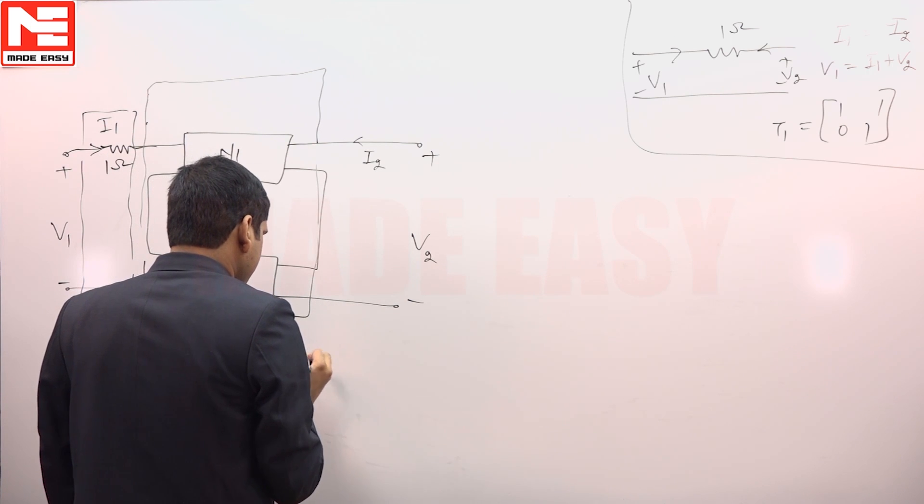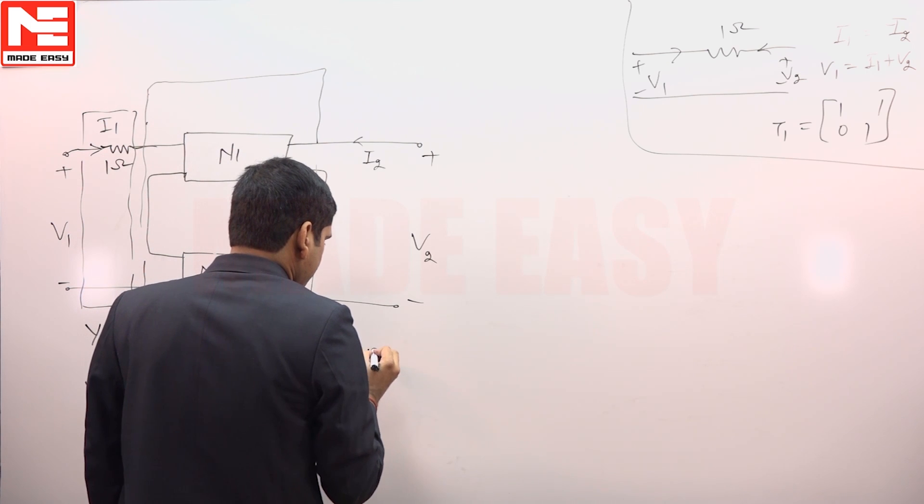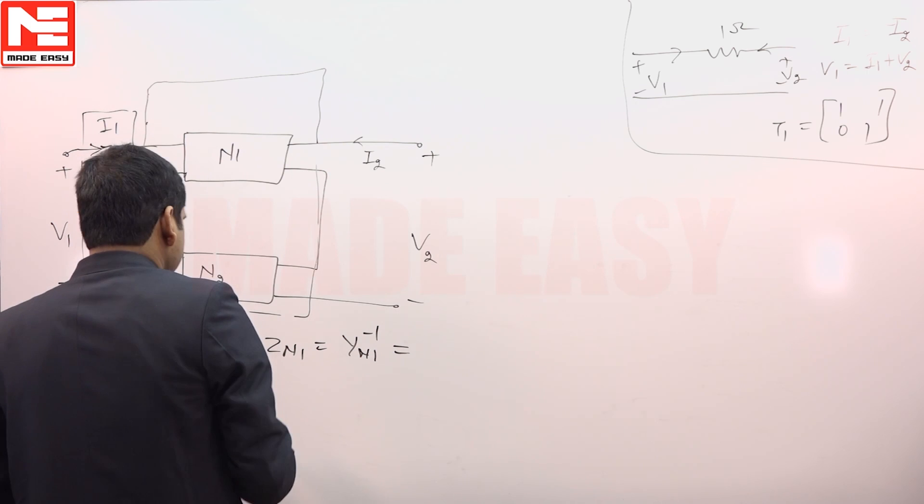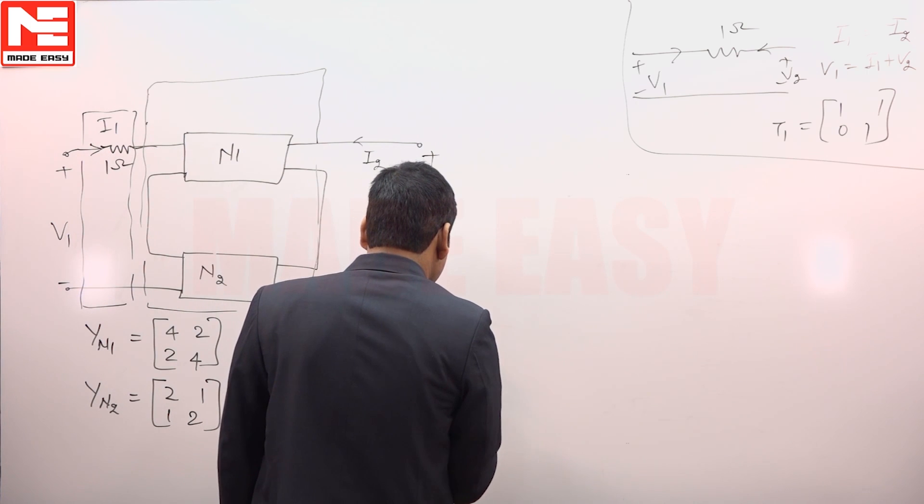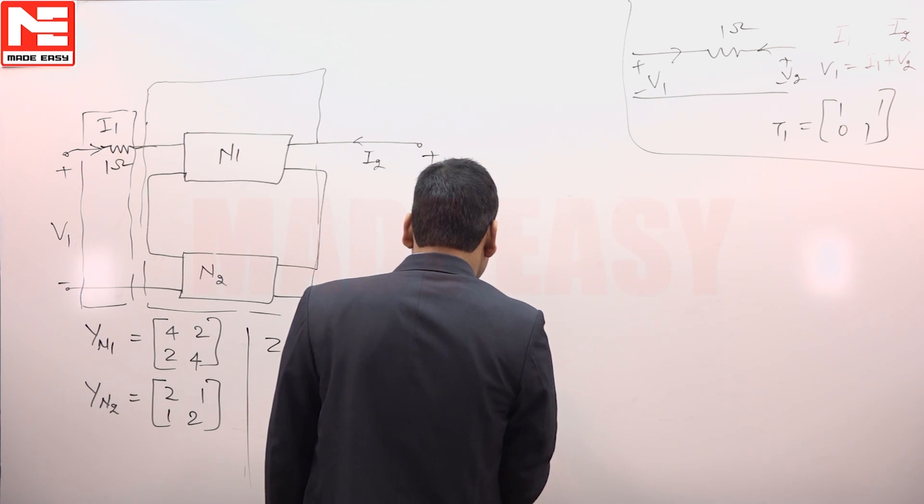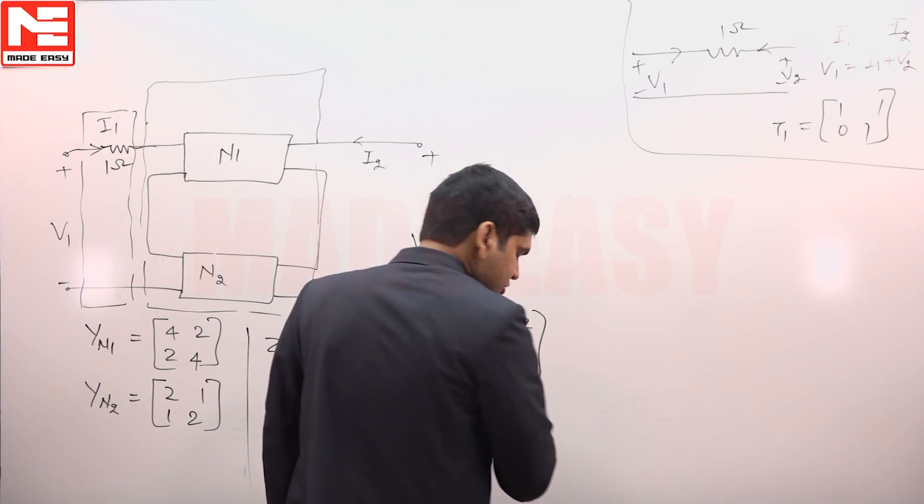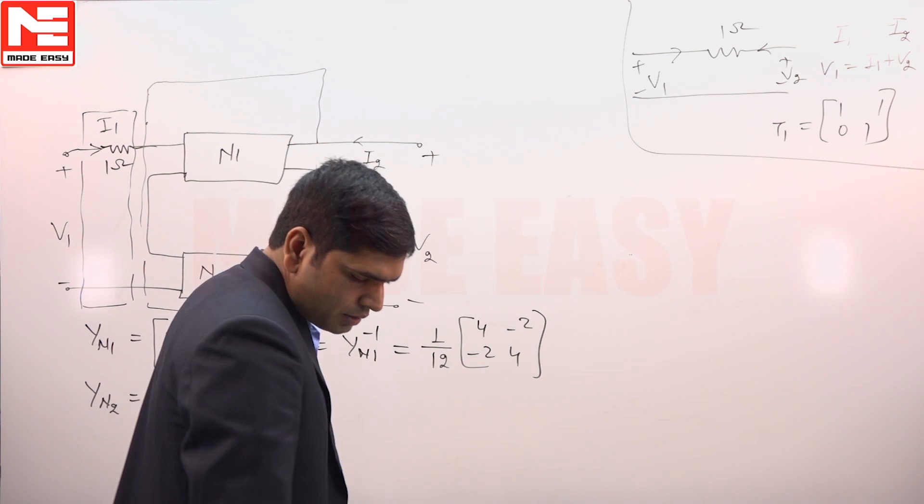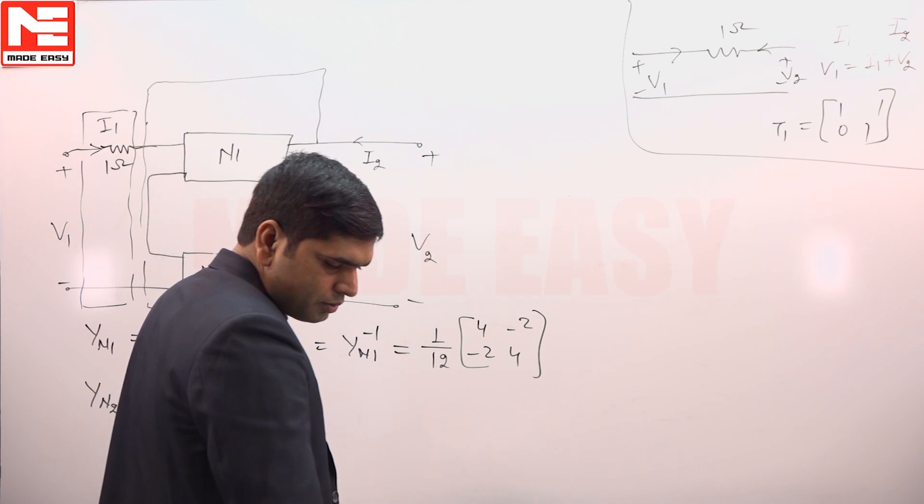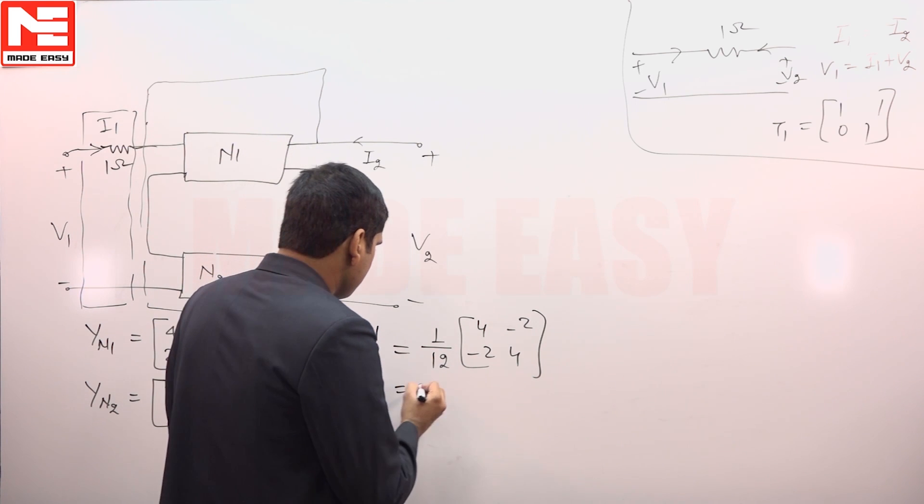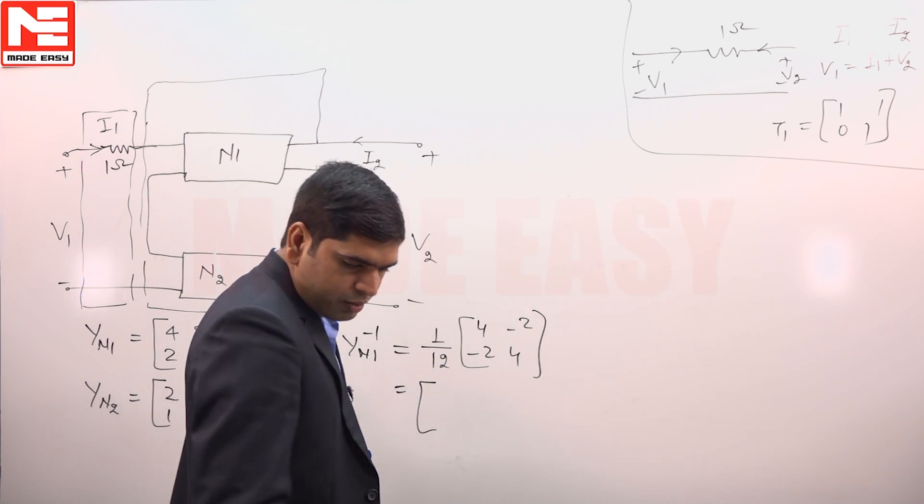So, Z N1 is equal to Y N1 inverse and to calculate inverse 16 minus 4, 1 by 12 and interchange the position 4 4, change the sign minus 2 minus 2. So, this is Y N1 and this will become 1 by 3, this is minus 1 by 6 and this is minus 1 by 6 and it is 1 by 3.